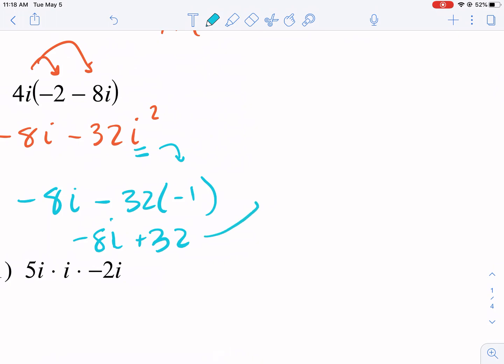Anytime you have a complex number, you want to rewrite it with the real part first. So 32 - 8i, that's going to be our answer.